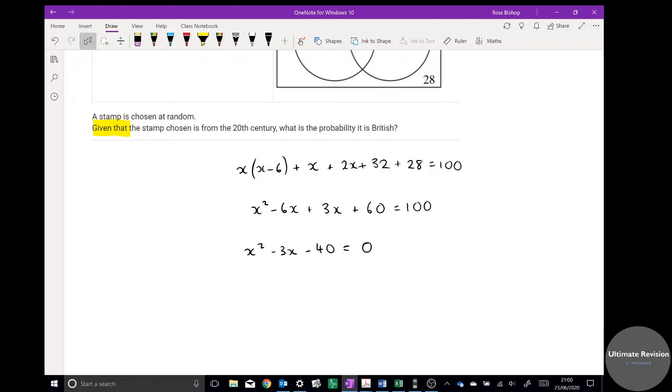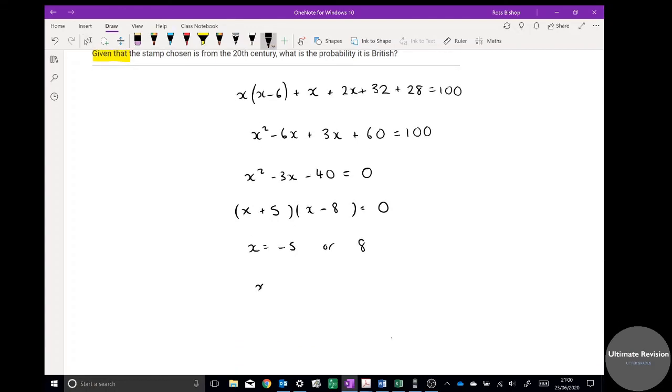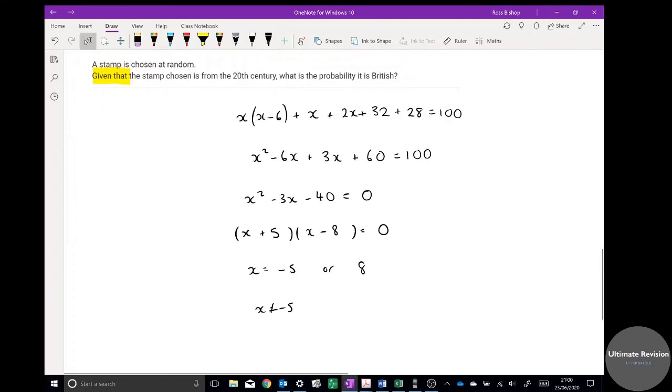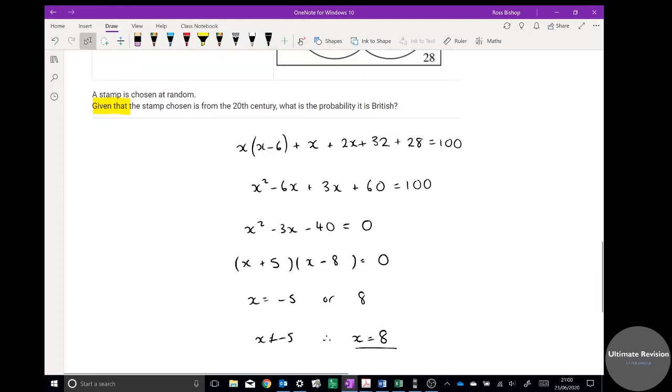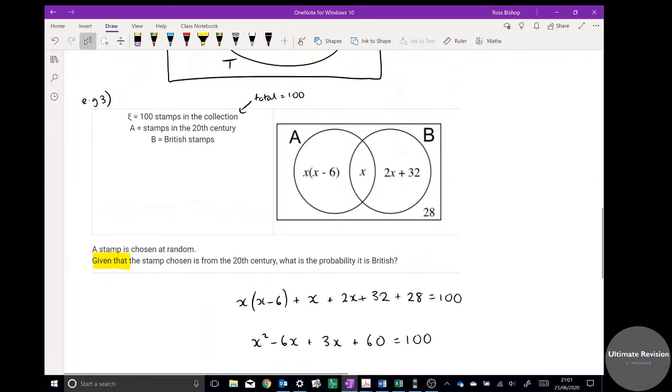And x squared minus 3x minus 40 is zero. I'm just rearranging that equation. Looks like I've got a quadratic here, which I do. This does factorize. You could have used the formula. It does factorize quite nicely. I think minus 8 and plus 5, so x is going to equal minus 5 or 8. X cannot equal minus 5 because it's a whole number. We can't have negative number of stamps. Therefore, x equals 8.